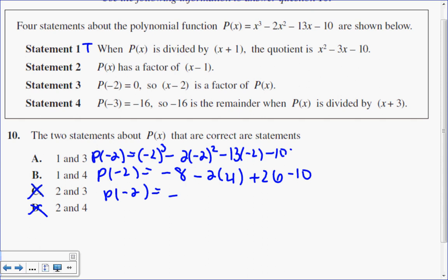Negative 8, take away 2 times 4 is 8, plus 26, minus 10. So looking at this, I have this is negative 16, and another 10 is negative 26. Negative 26 plus 26 is, in fact, 0.